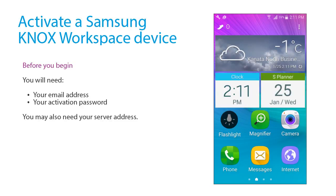Activate a Samsung Knox Workspace device. You will need your work email address and the activation password that your administrator sent to you.